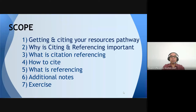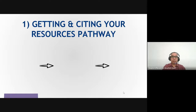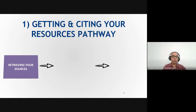You can also ask questions in Bahasa Malaysia if you're not familiar with English. First, getting and citing your resources pathway. Beside following research methodology and literature review format, you also have to follow a pathway called 'getting and citing your resources.' There are three steps to follow. The first step is retrieving your sources — getting your journal, book, maybe from the internet or a reliable website. You can learn this through the library.